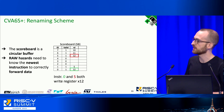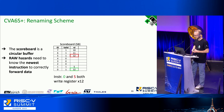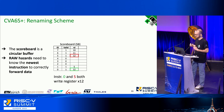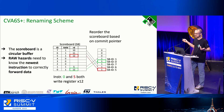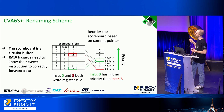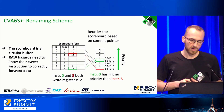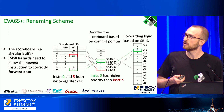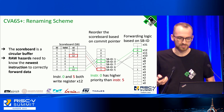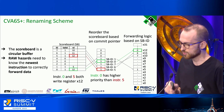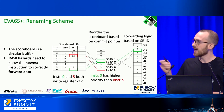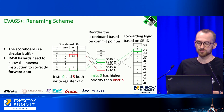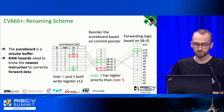Consider two instructions writing the same register X12. We have a commit pointer indicating the oldest valid in-flight instruction in the scoreboard. By rotating the circular buffer, we introduce a priority ordering — for example, instruction zero has higher priority than instruction five and is the newest in the dynamic instruction stream. This lets us decide which scoreboard entry provides data for forwarding to solve read-after-write hazards. We are effectively renaming because we use scoreboard IDs rather than destination register addresses.